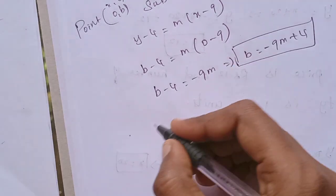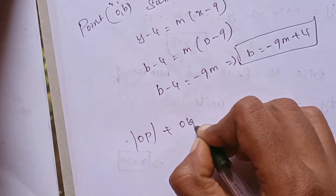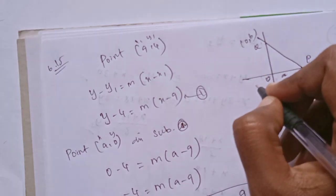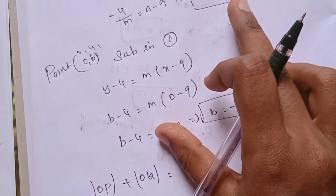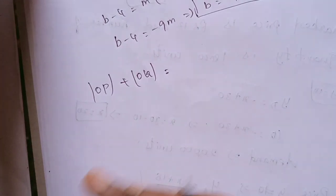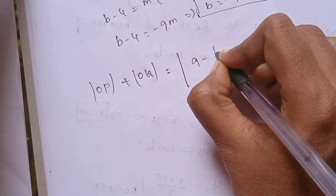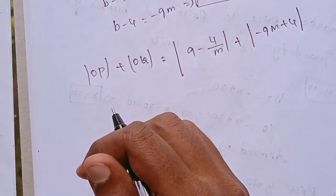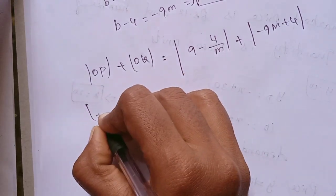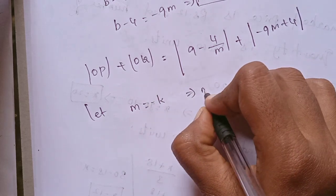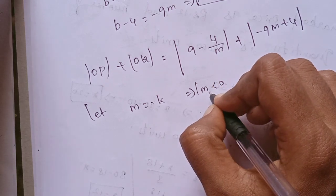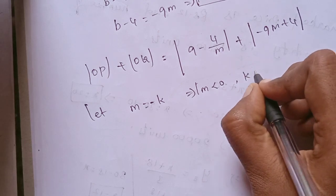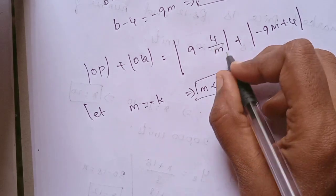Now OP + OQ. OP is the distance a, and OQ distance is b. Since m is less than 0 and we have negative slope, let m = -k where k > 0. Then substitute.